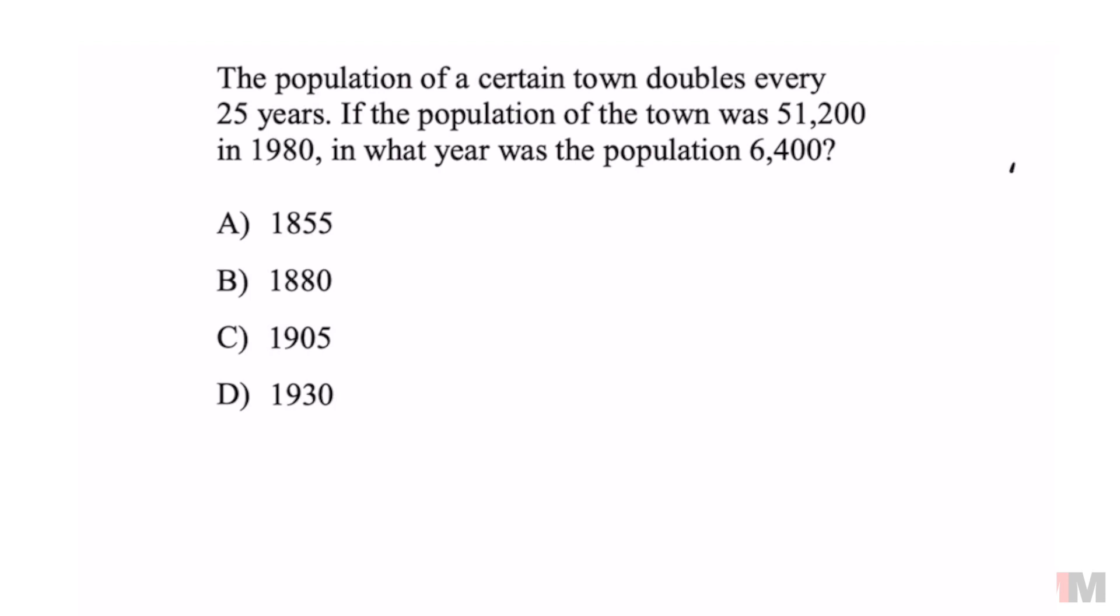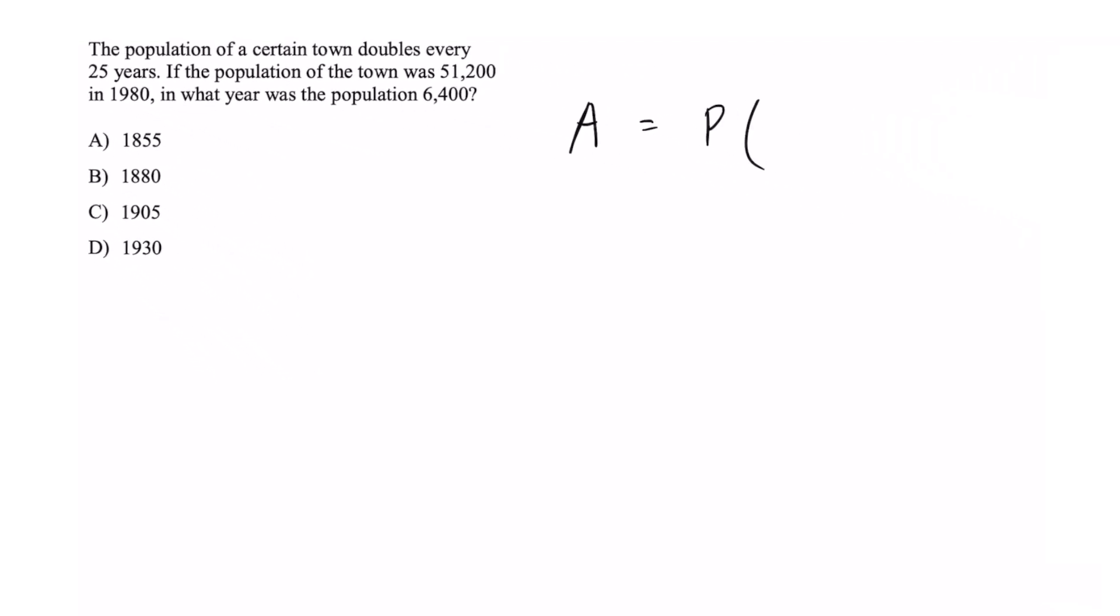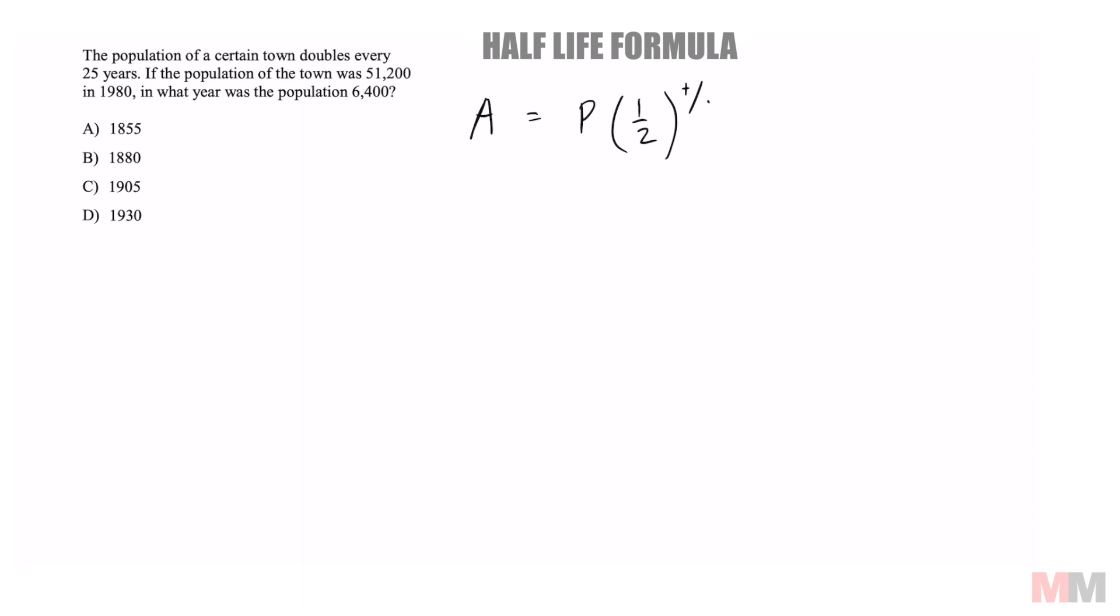The half-life formula is this: A equals P times one-half to the power of T over D.